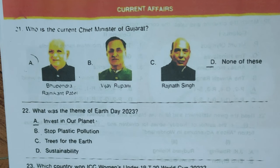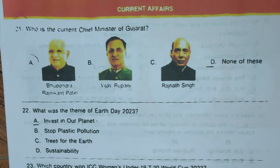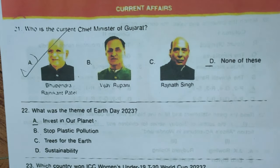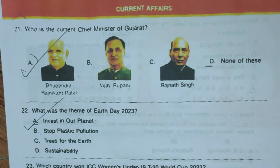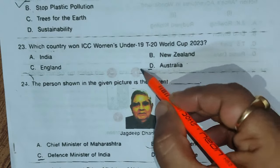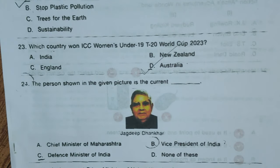Moving to the Current Affairs section. Question 21: Who is the current Chief Minister of Gujarat? Options: A) Bhupendra Rajnikant Patel, B) Vijay Rupani, C) Rajnath Singh, D) none of these. Correct answer is A, Bhupendra Rajnikant Patel. Question 22: What was the theme of Earth Day 2023? Options: A) Invest in Our Planet, B) Stop Plastic Pollution, C) Trees of the Earth, D) Sustainability. Correct answer is A, Invest in Our Planet. Question 23: Which country won the ICC Women's Under-19 T20 World Cup 2023? Options: A) India, B) New Zealand, C) England, D) Australia. Correct answer is D, Australia.